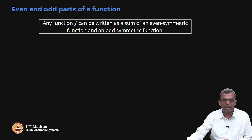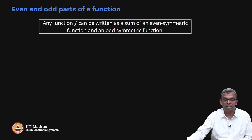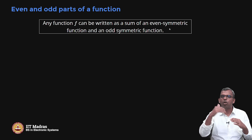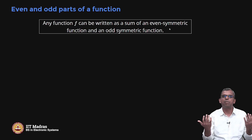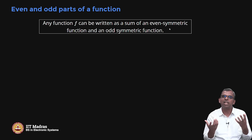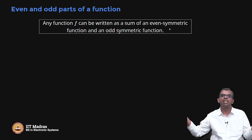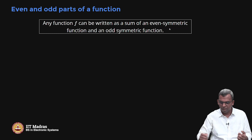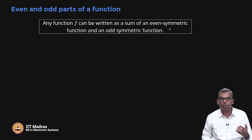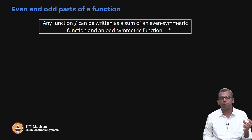It turns out any function f can be written as a sum of an even symmetric function and an odd symmetric function. This is very important to know because many functions may not have odd symmetry or even symmetry — only some functions have. What about a function which does not have any symmetry? It turns out you can still write it as a sum of an odd symmetric part and an even symmetric part.